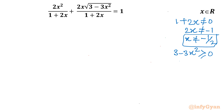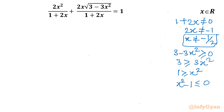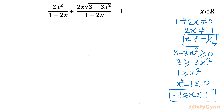Taking 3x² to the right gives 3 ≥ 3x², and dividing both sides by 3 gives x² ≤ 1, so x² − 1 ≤ 0. Using the number line method, x must be between −1 and 1. And if you recall, this is the range of the sine and cosine functions.